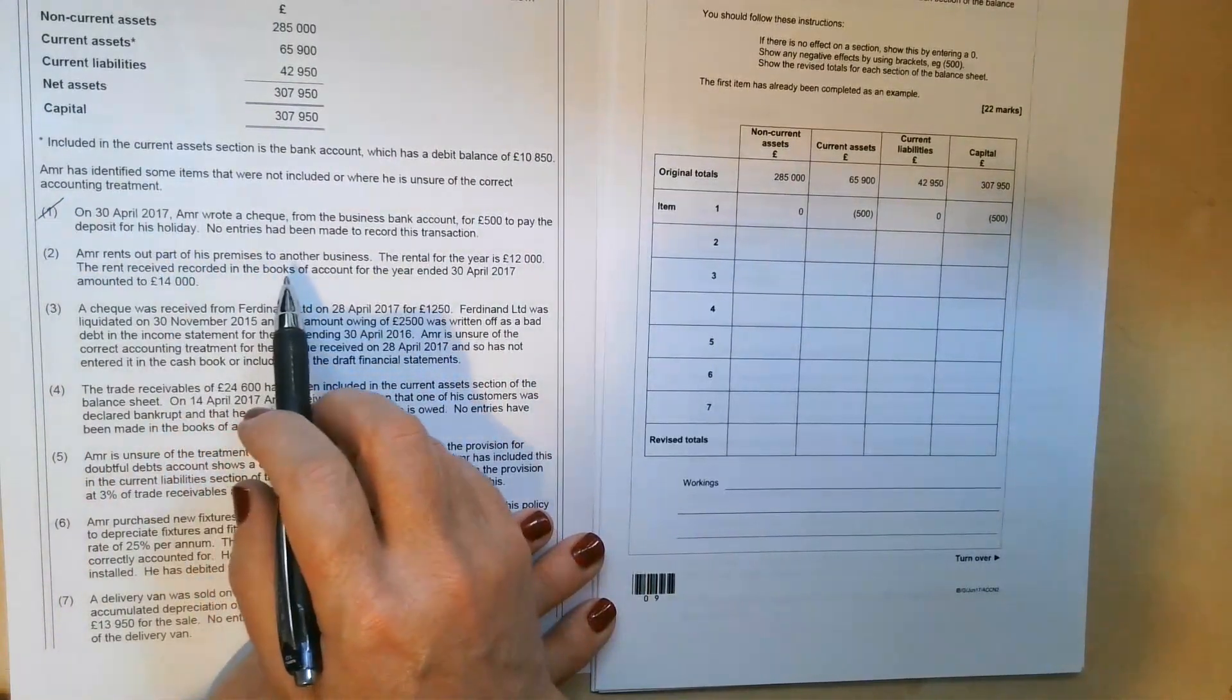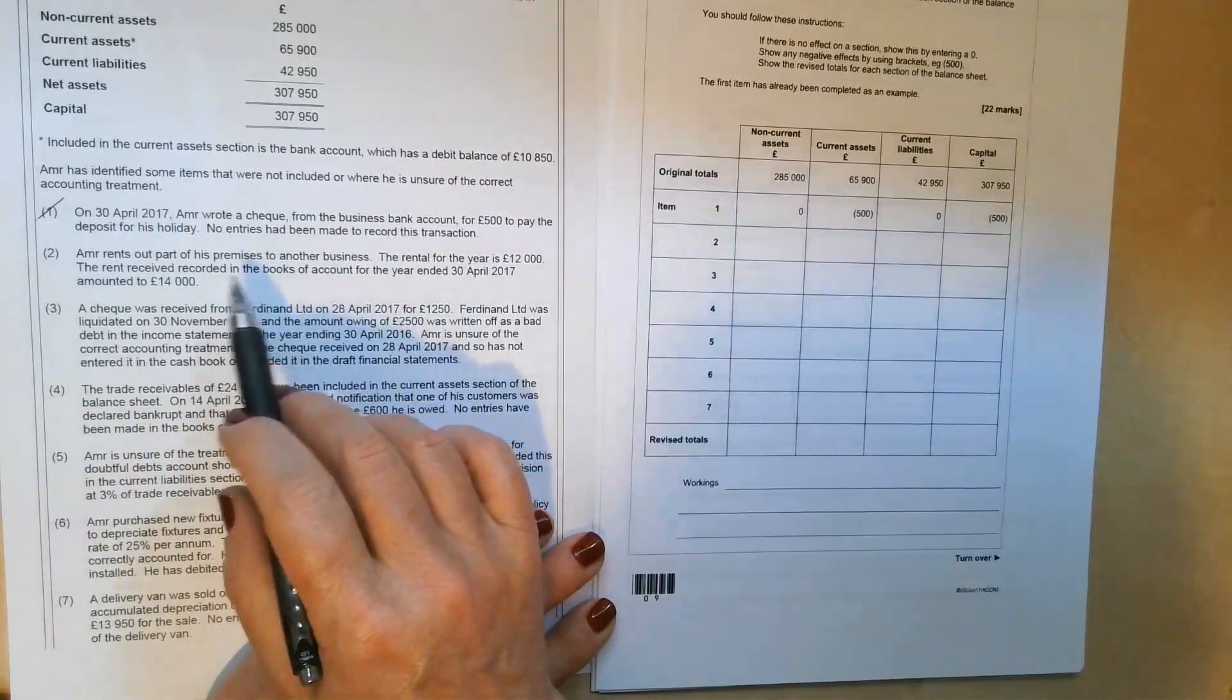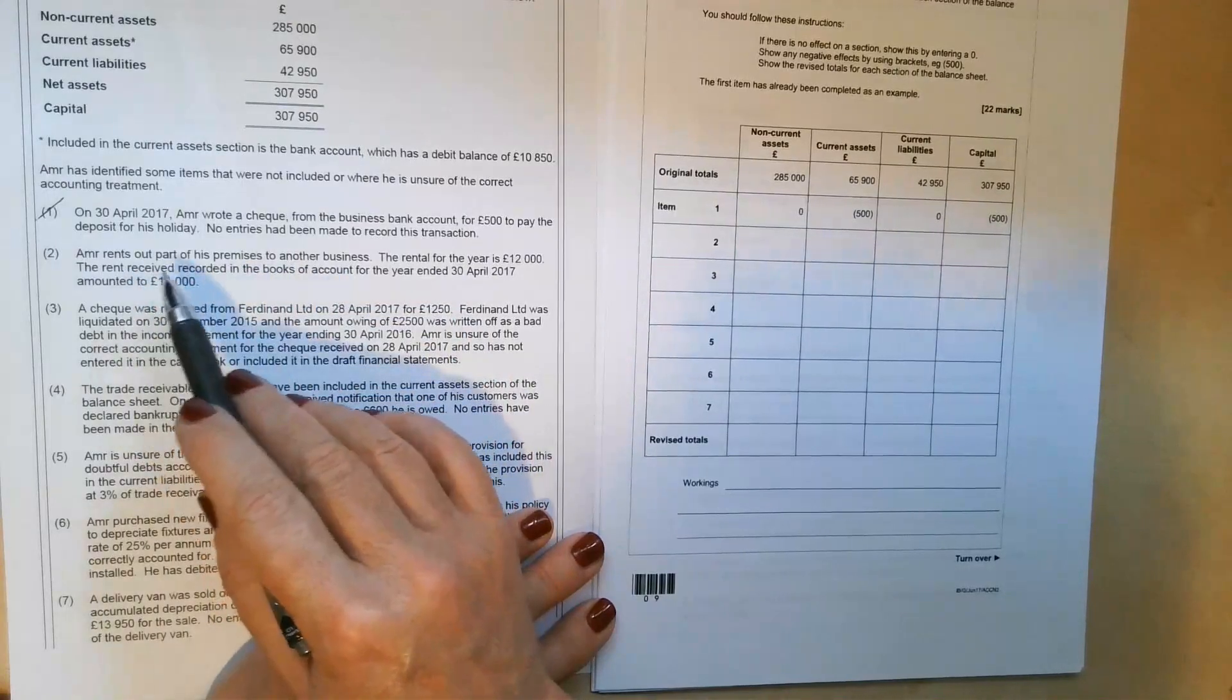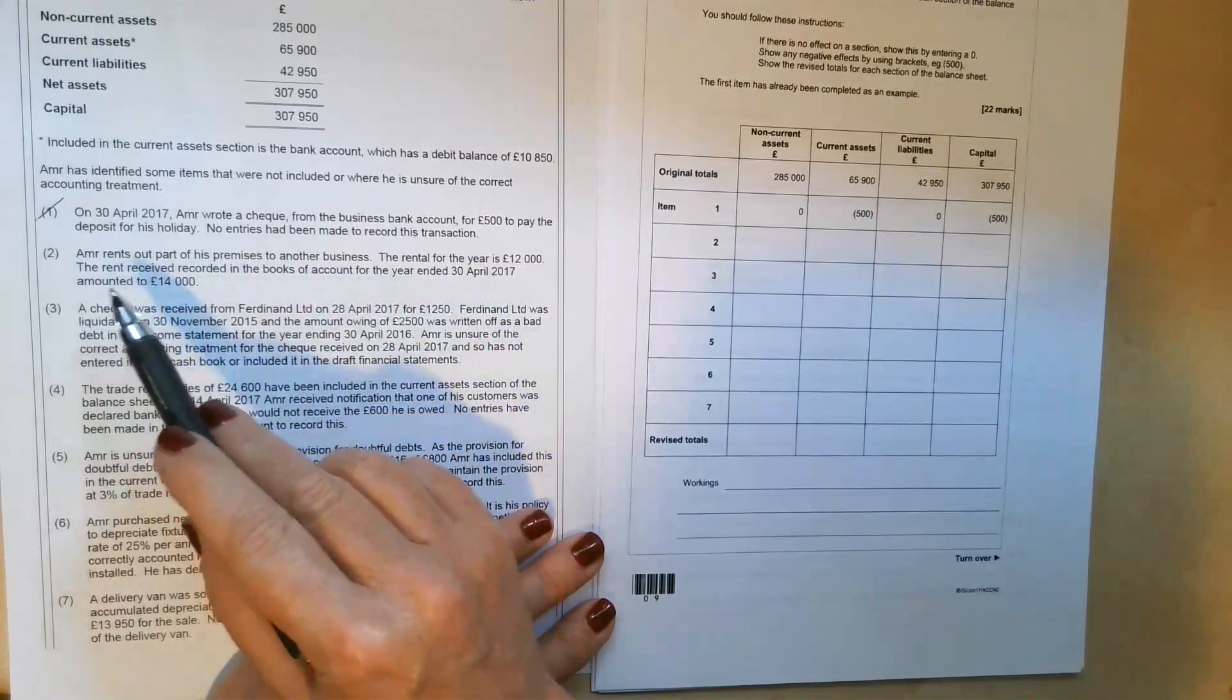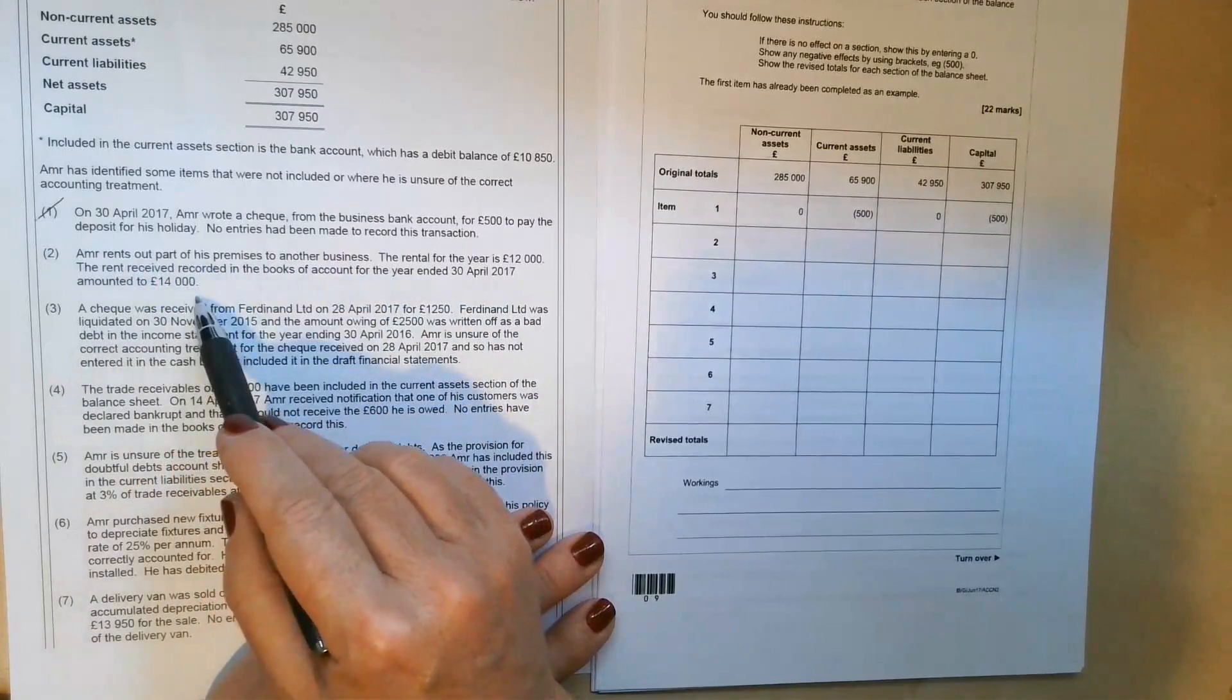So number two, Amir rents out part of his premises to another business. The rental for the year is £12,000. But the rent received recorded in the books of account for the year ended 30th of April 2017, amounted to £14,000.